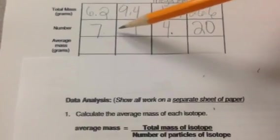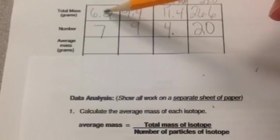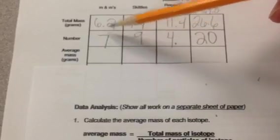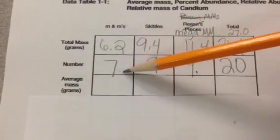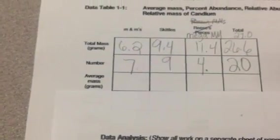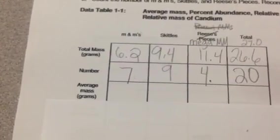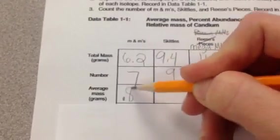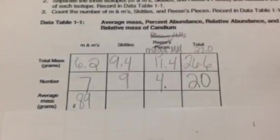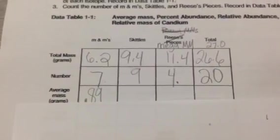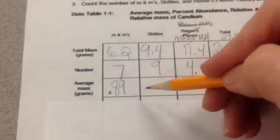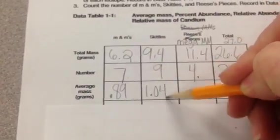Average mass is what we're looking for. So here's our total mass, and we divide it by the number of particles. So for each one, we're just dividing this number, the total mass, by the number to get your average mass in grams of each one, which makes perfect sense. So 6.2 divided by 7 is going to give us 0.885, so we will round that to 0.89. Two digits should be plenty.